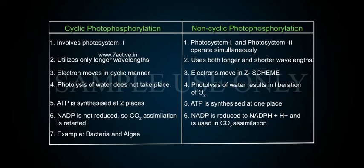Point 7: Cyclic photophosphorylation occurs in bacteria and algae, whereas non-cyclic photophosphorylation occurs in green plants.